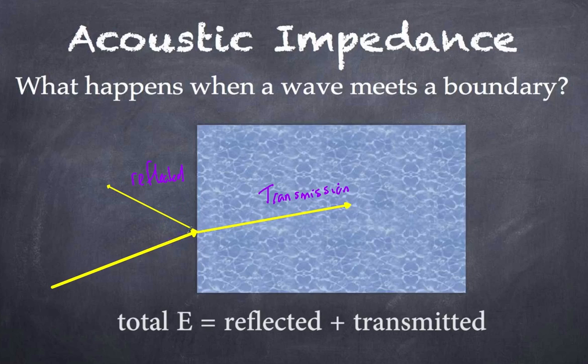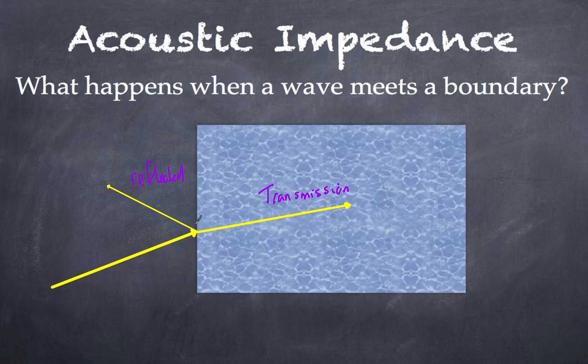When we have a wave going in, the total energy is conserved. The amount transmitted plus the amount reflected follows the law of conservation of energy. But the amount that passes through and the amount reflected depends on the nature of the two substances where the boundary exists.